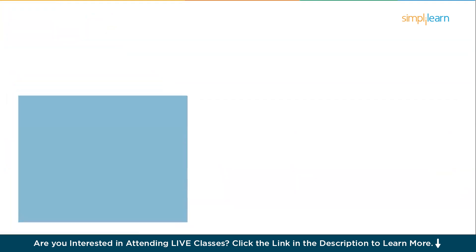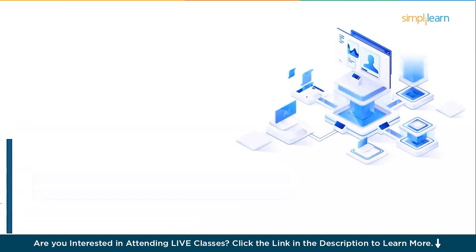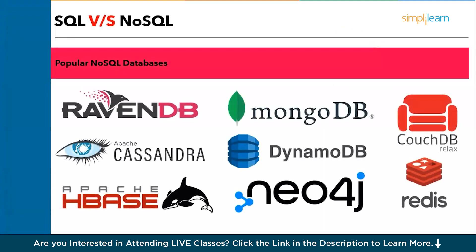Let's proceed with understanding some of the popular databases based on the NoSQL platform. Some of the popular NoSQL databases are RavenDB, MongoDB — which can work with SQL as well as NoSQL — Apache Cassandra, one of the popular databases created by Facebook, DynamoDB from Amazon, KarchDB, Apache HBase, Neo4j, and Redis. Now we have a comfortable understanding of what exactly NoSQL databases are, their features, and some popular databases currently being used in the IT industry.